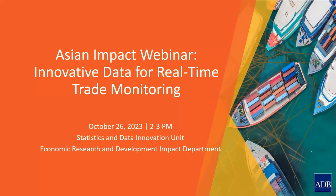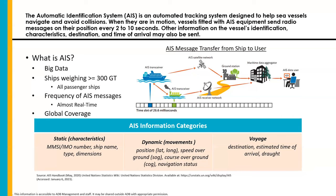In this presentation, we'll be discussing how we made use of AIS data for real-time trade monitoring. Let's first understand what AIS is. AIS, or Automatic Identification System, is a tracking system for ships which was originally developed for collision avoidance. Because ships emit signals of their location every few seconds, this allows for real-time geo-tracking and identification for vessels equipped with AIS.